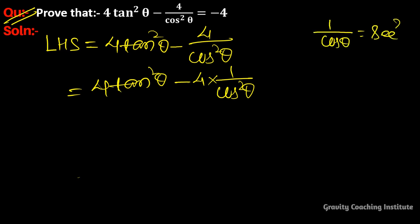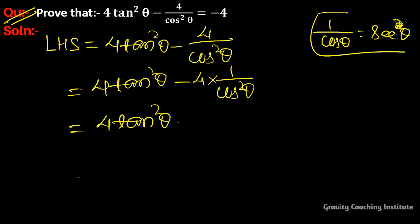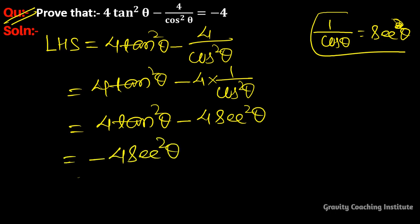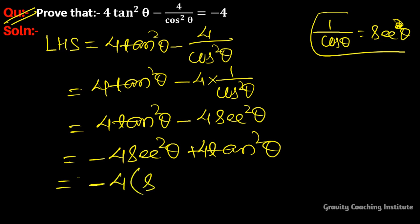So this becomes 4tan²θ - 4sec²θ, which equals -4sec²θ + 4tan²θ. Now we take -4 as a common factor: sec²θ - tan²θ.